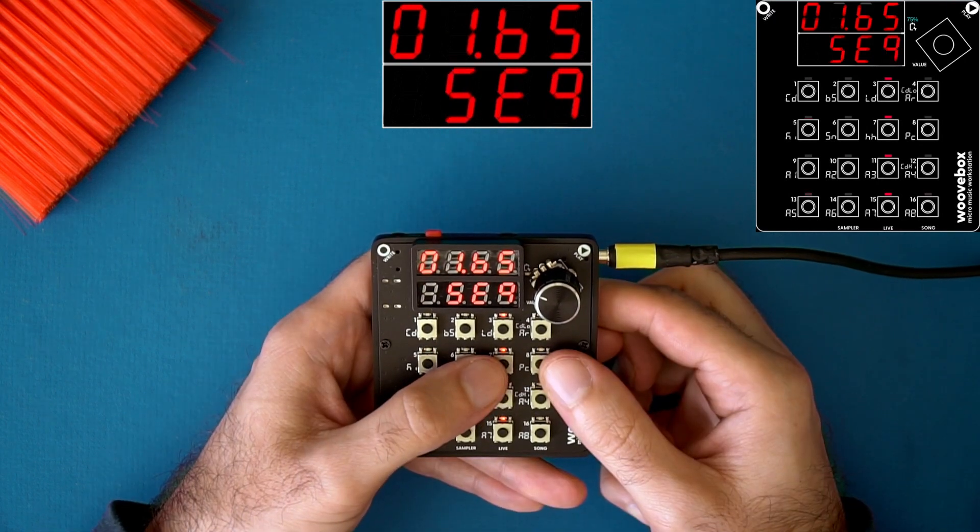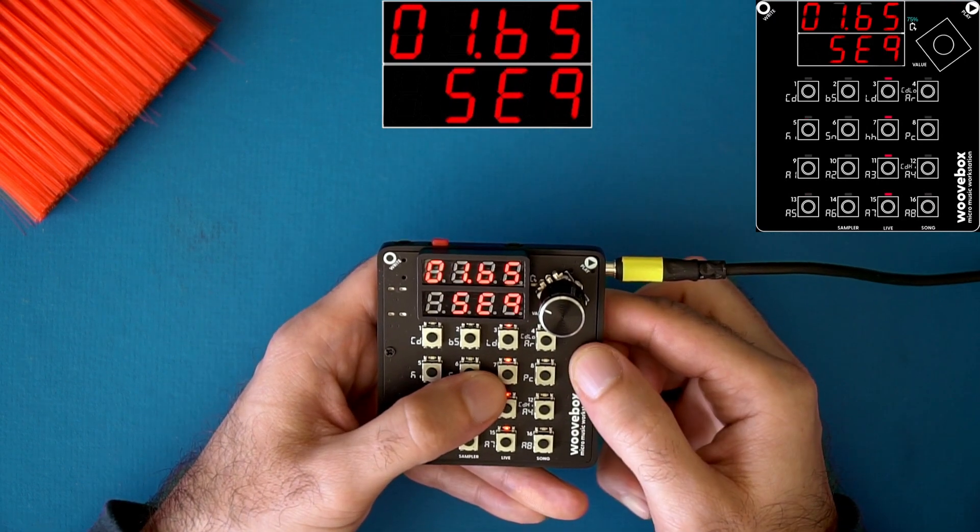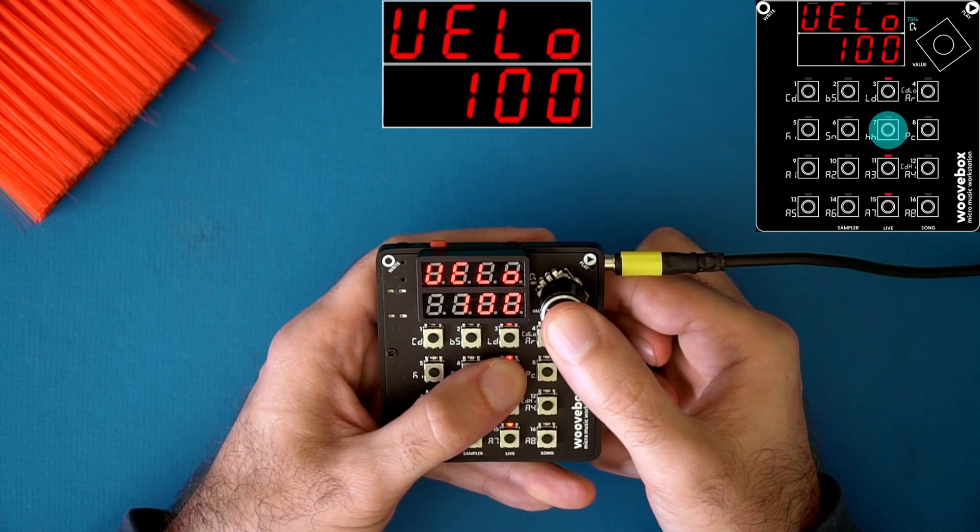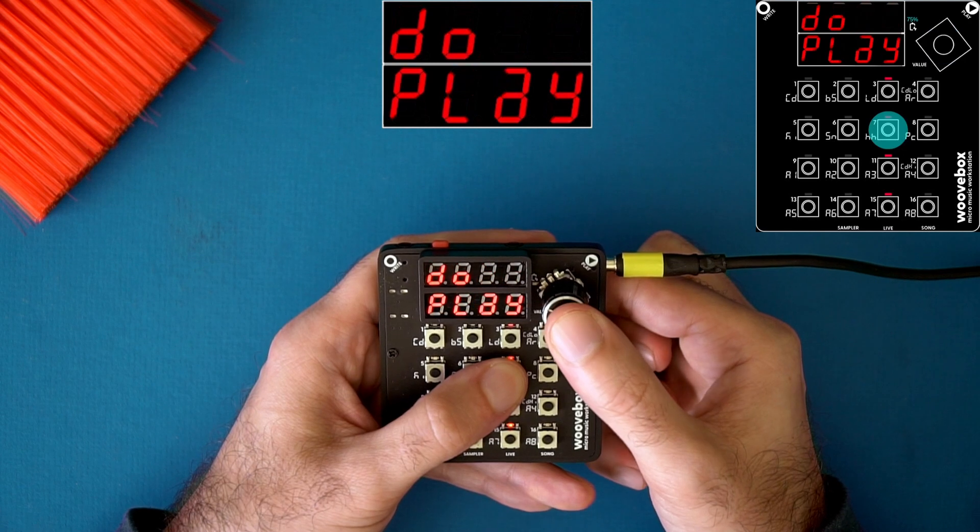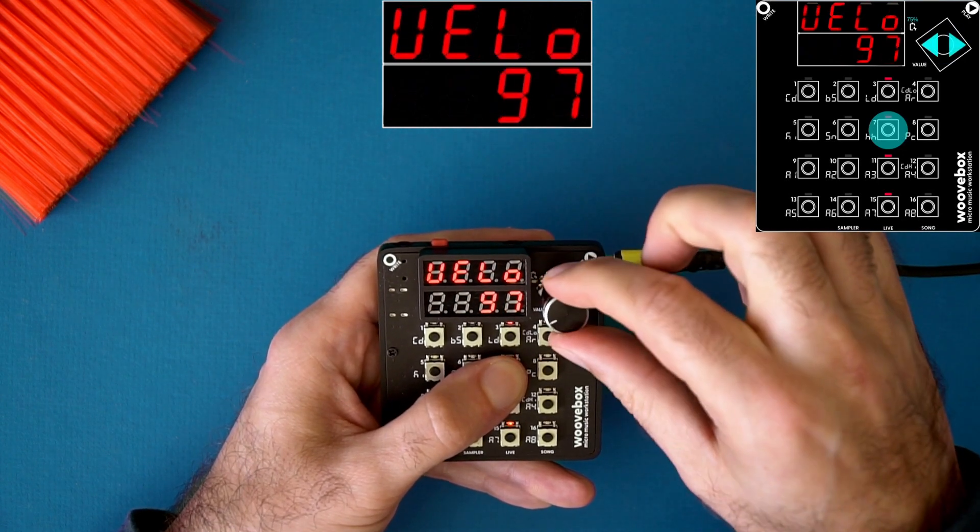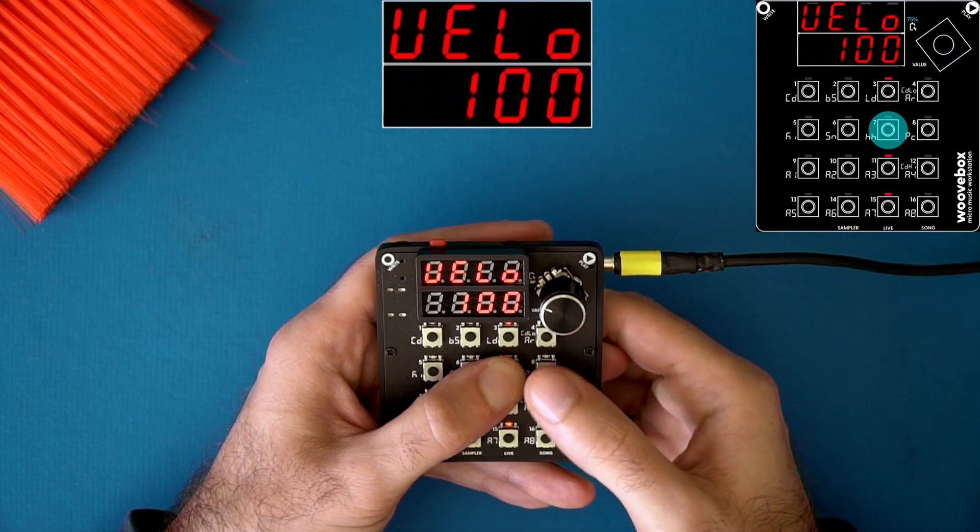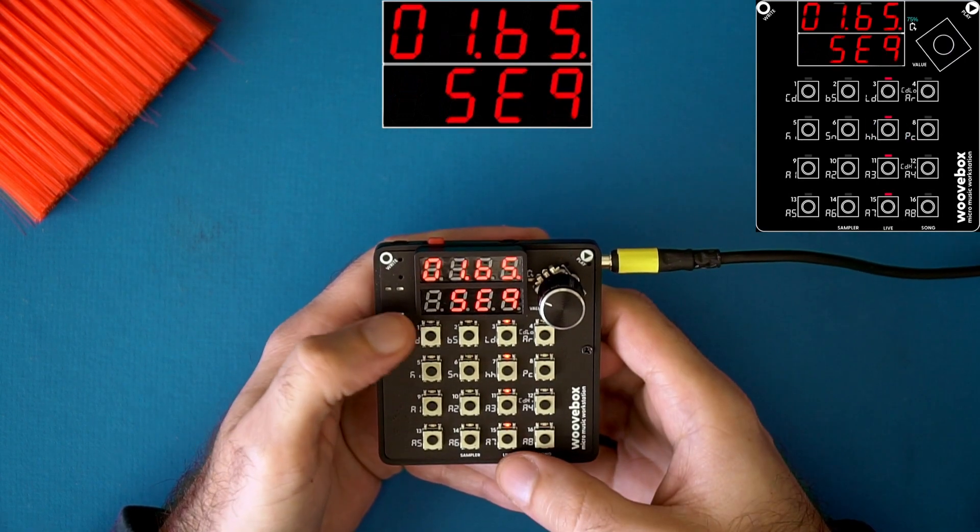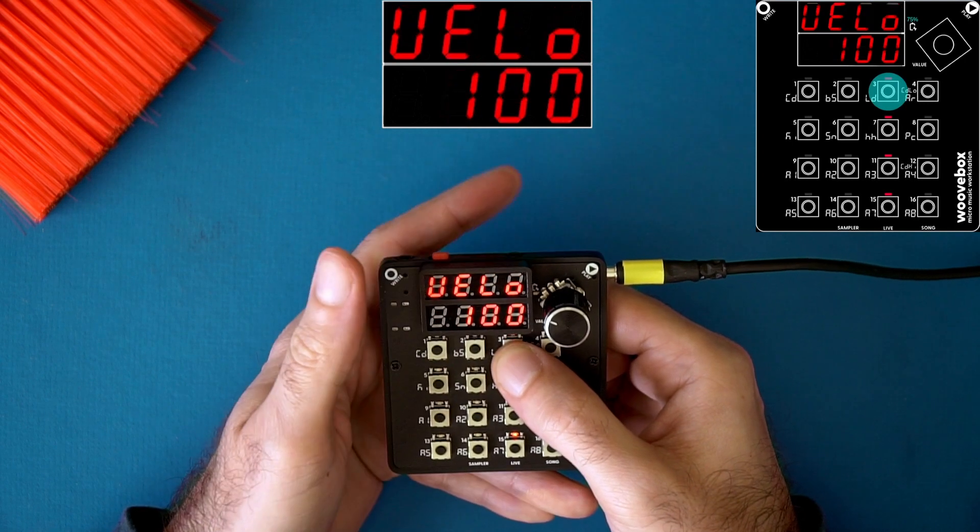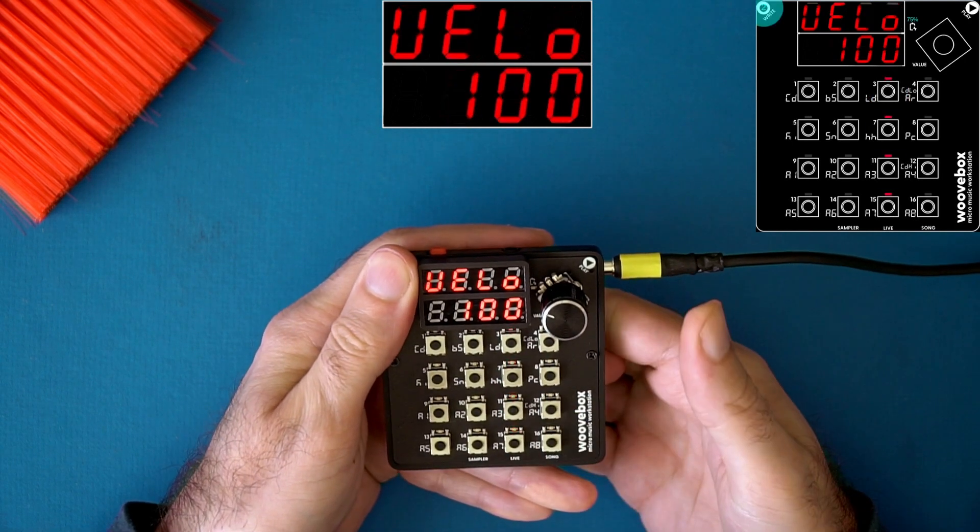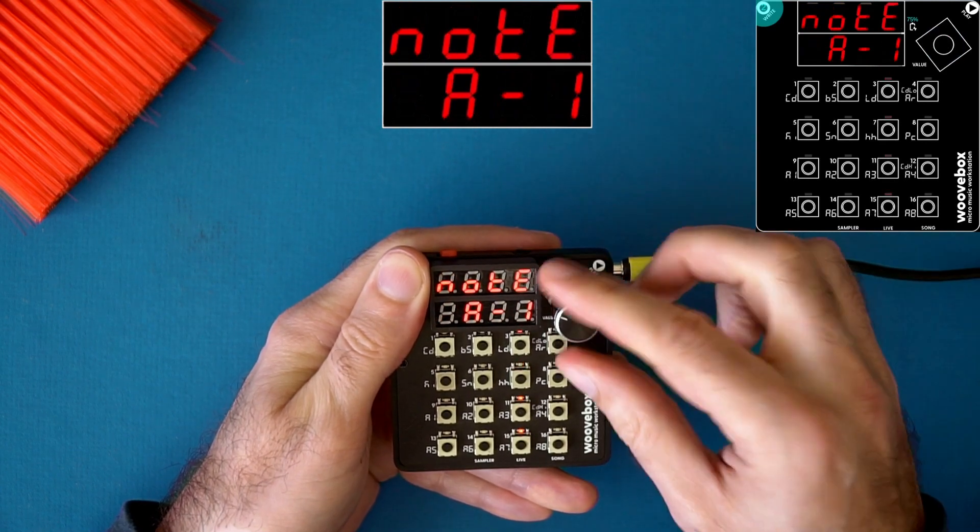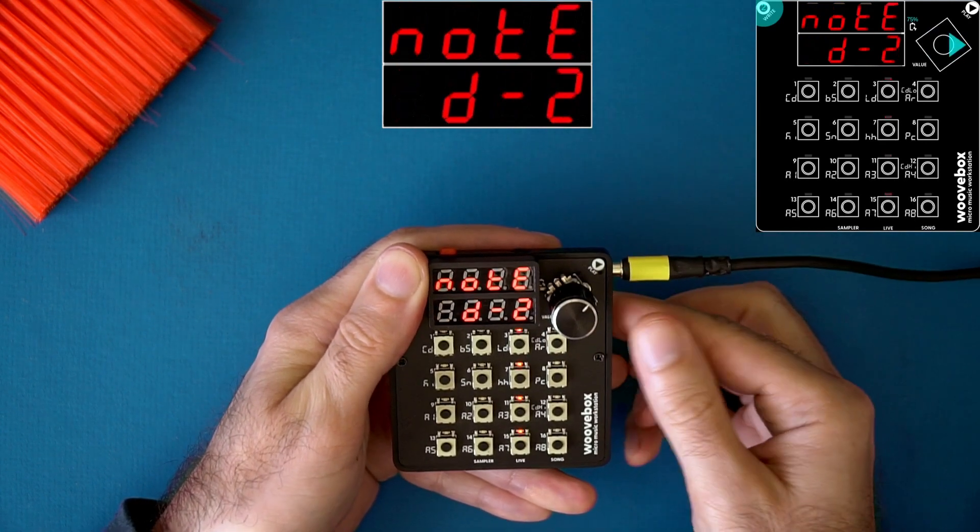Tip number six is to use the per step menu. You access it by holding down a step and then clicking the encoder to navigate the various parameters, and then you change that parameter by turning the encoder. Bonus tip for this one is that you can select multiple steps. So let's say you hold the first step down, when it's blinking you hold right and then you can multi-select. So now I can change all of these steps to a different note.